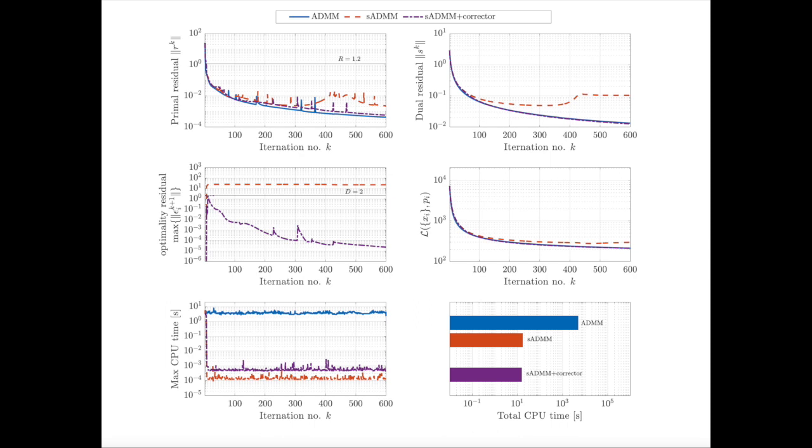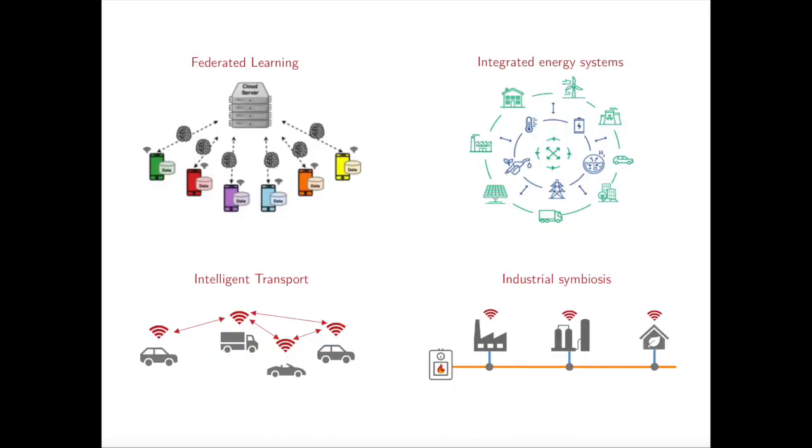Our proposed sensitivity-assisted distributed optimization also has a broader impact on optimization problems arising in several areas, such as distributed learning, real-time control of multi-agent systems, flow routing problems, optimal resource allocation, to name a few, all of which can be formulated as a distributed optimization problem and solved efficiently using the proposed sensitivity-assisted distributed optimization framework.